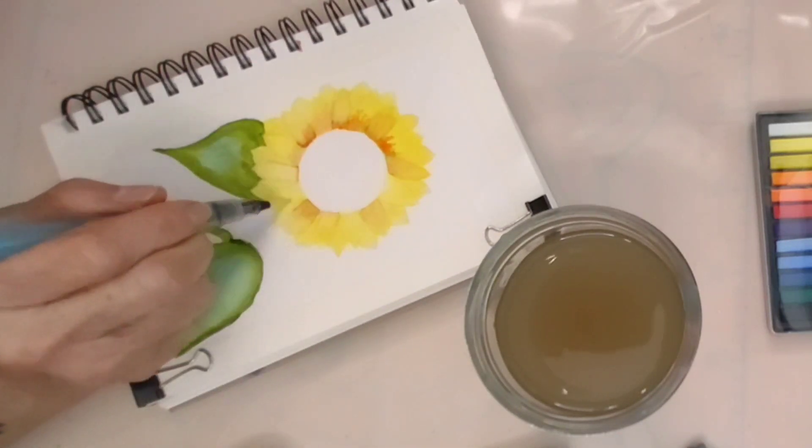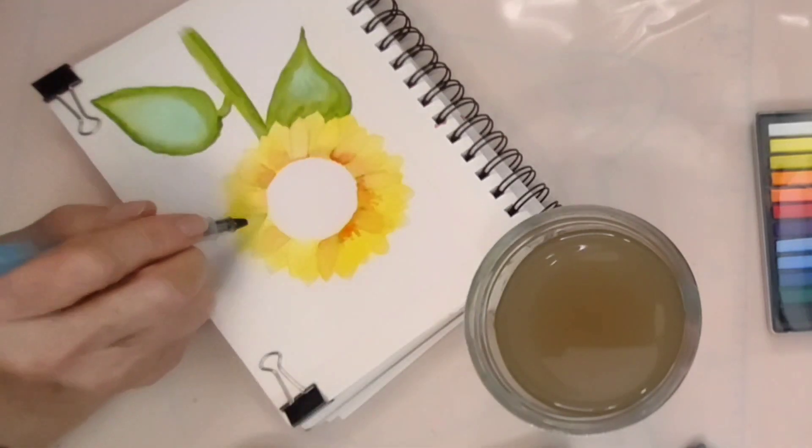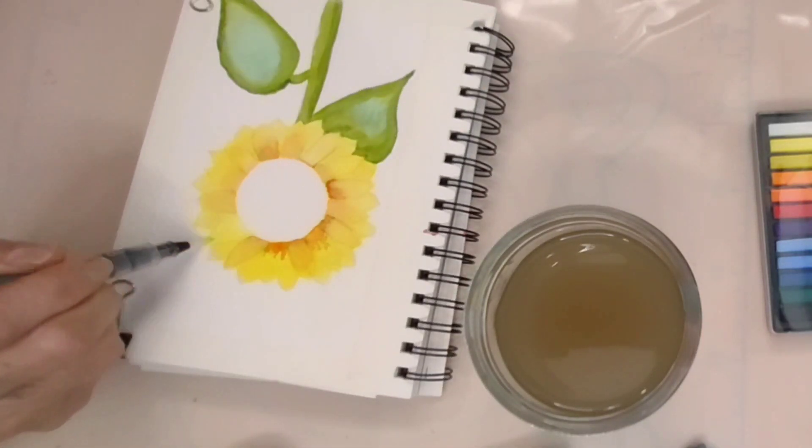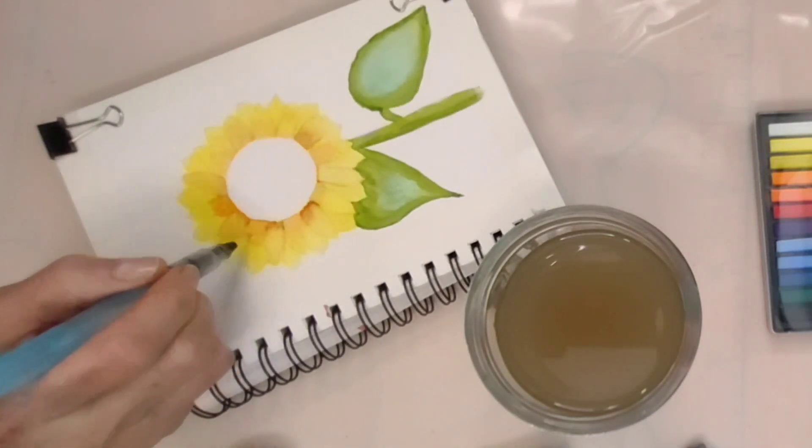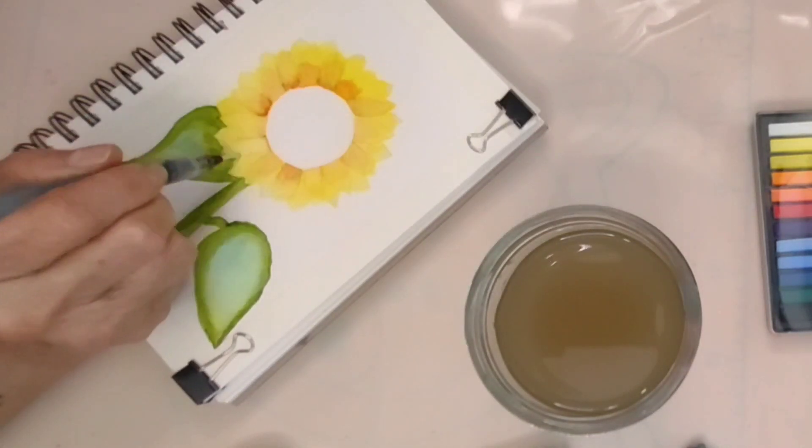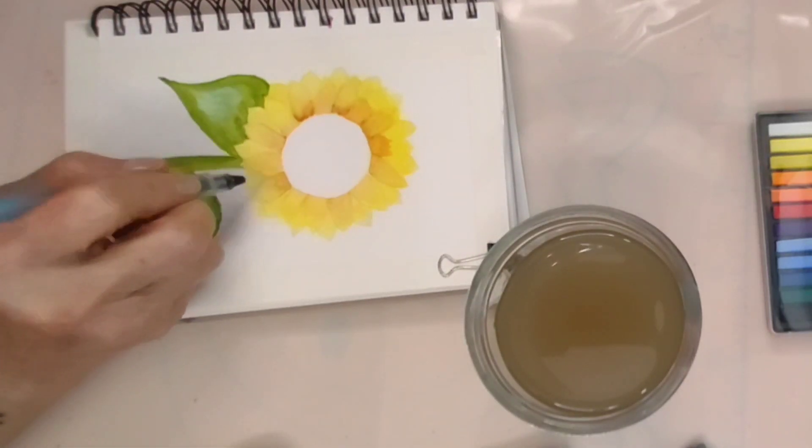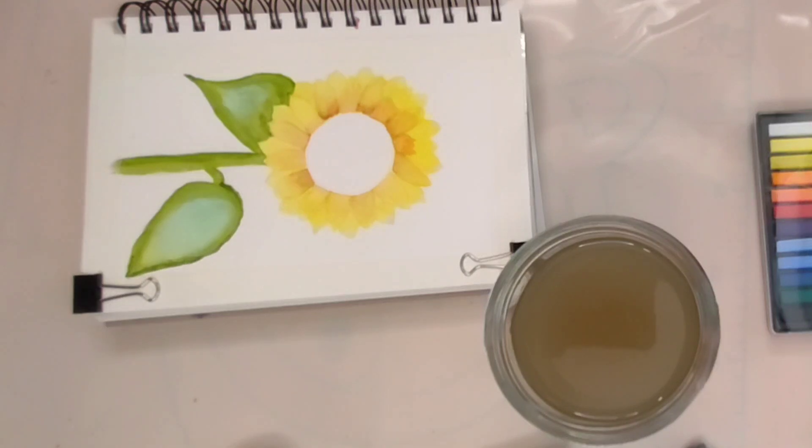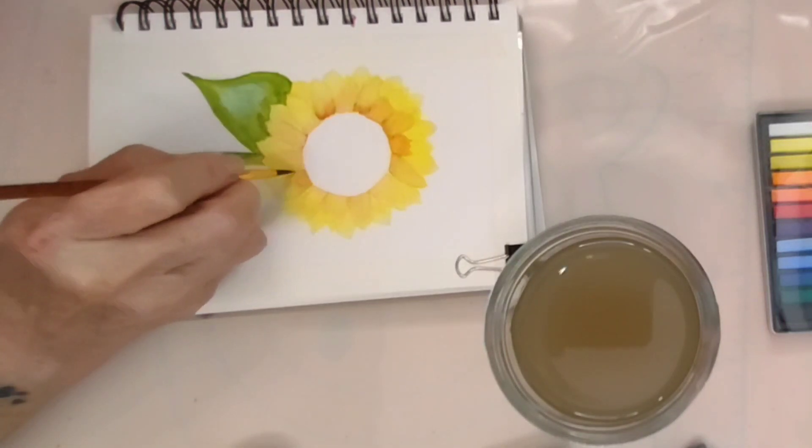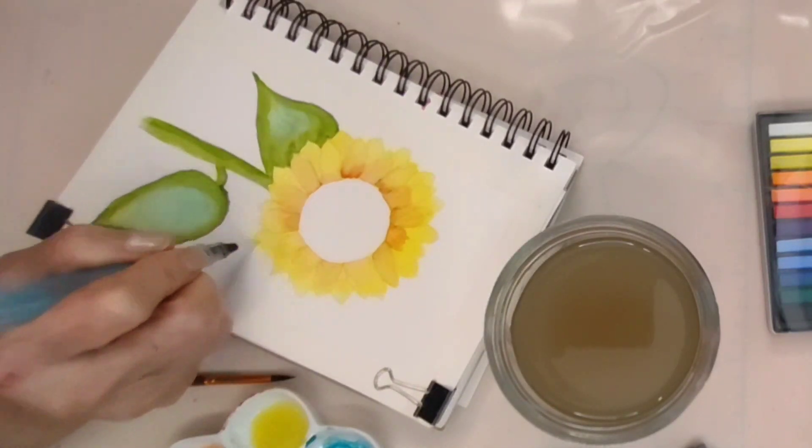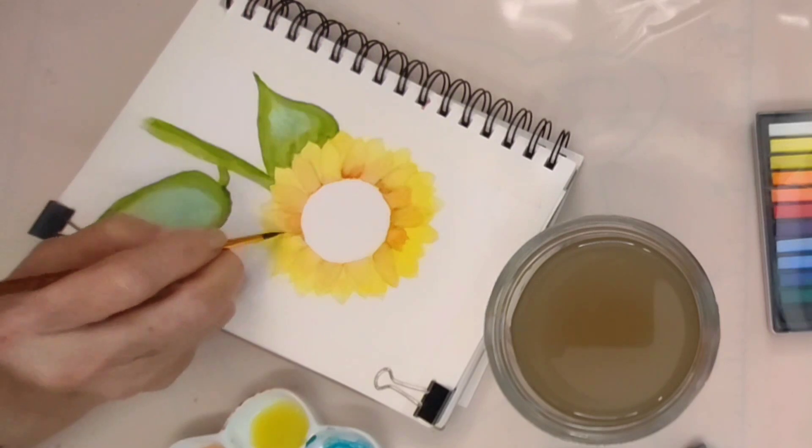This symbolism of loyalty and devotion is often tied to romantic relationships. Sunflowers are commonly given as a gift to express deep love and admiration for someone. They represent steadfast commitment and a promise to always be there for the person we care about. Sunflowers can also be used to symbolize friendship and loyalty in platonic relationships, making them versatile symbols of devotion.